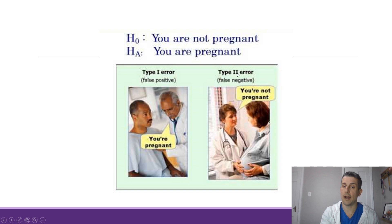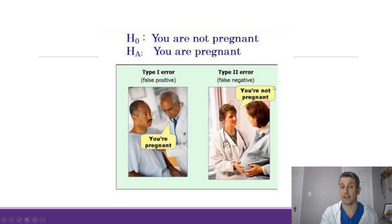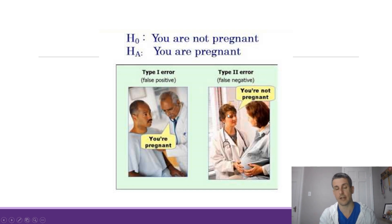A type 2 error is a false negative. Obviously, this woman is pregnant, and the doctor is saying you're not pregnant. The null hypothesis is not true — it's false — but we are accepting the null hypothesis. So, this is a type 2 error, a false negative. And these are the two types of errors that you can make in hypothesis testing.